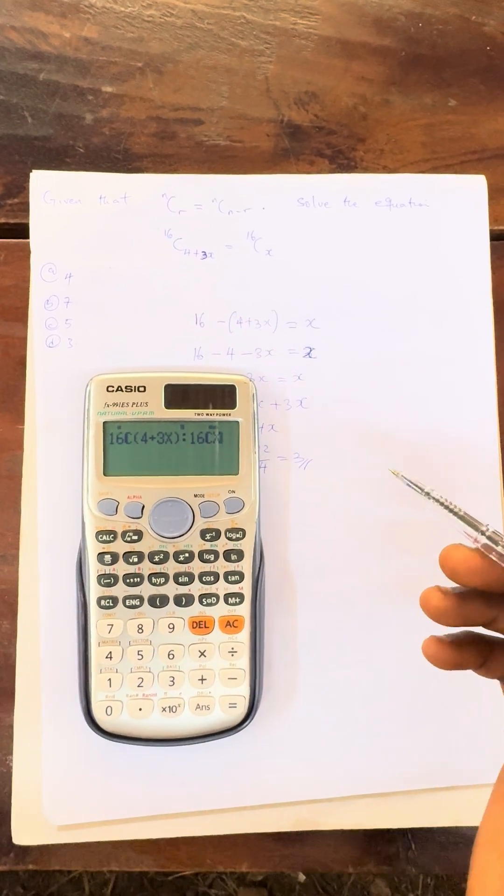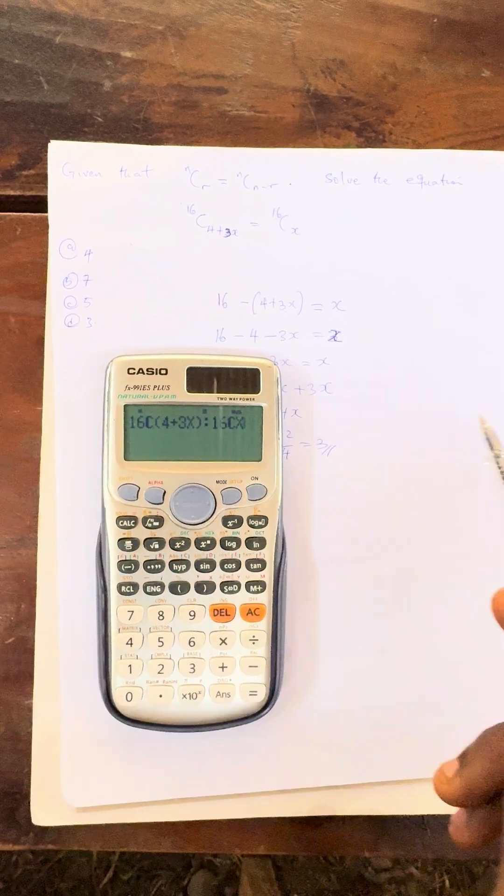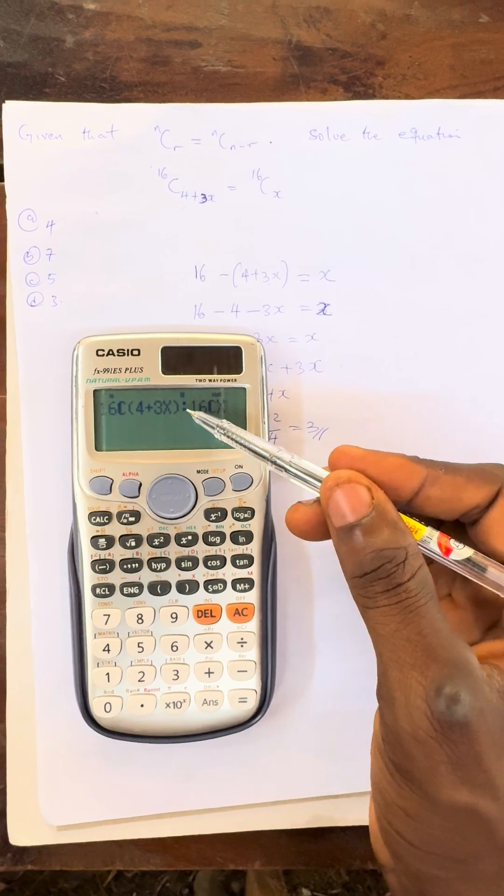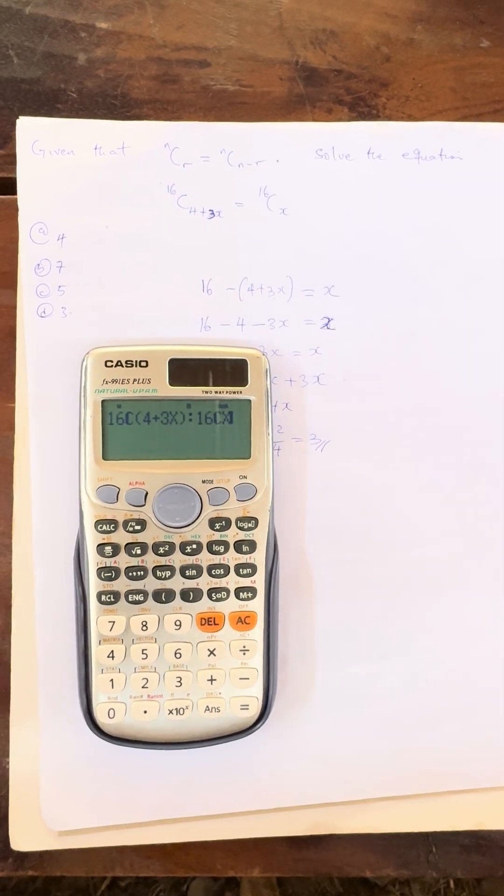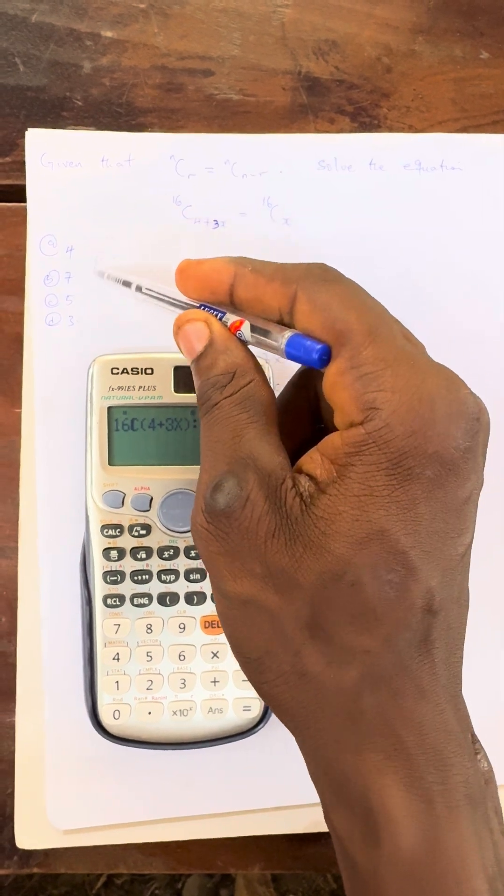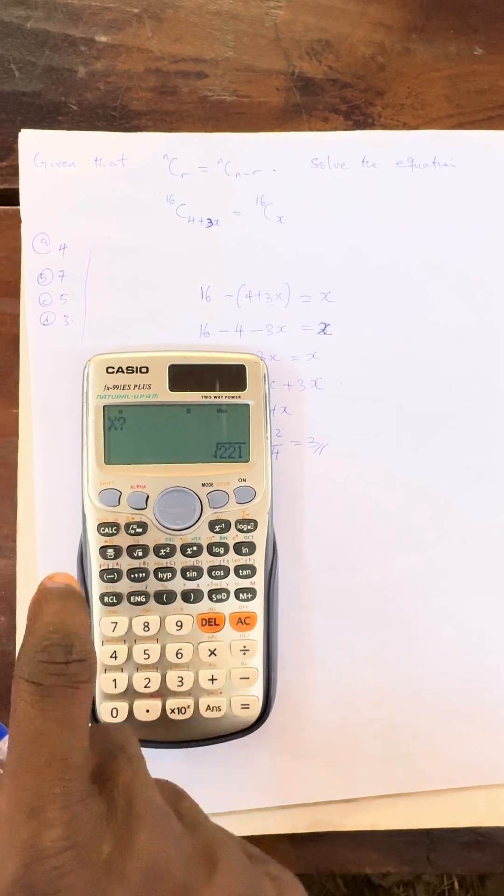Now if you see this method, this method is trying to say that your left side, the answer for the left side must be equal to the right side. The answer for the left side must be equal to the right side whenever you use this dot. Now let us see. The correct answer of x from this option must make the left side to be equal to the right side. Now let us insert, then press calculate.